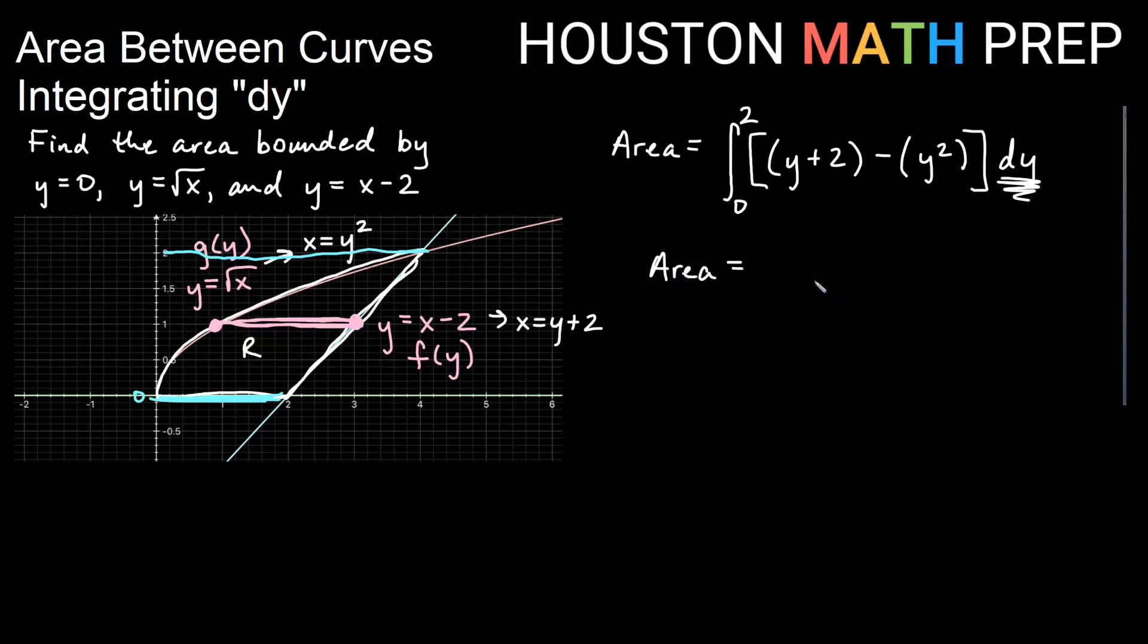So we'll work it out now. The area is going to equal the anti-derivative of y. Again, y squared over 2. Anti-derivative of 2 is going to be 2y. Resist the temptation to say 2x. Here, power rule again. Minus, just like the last one, y cubed over 3. Our bounds are 0 to 2. And so when we do our area, we will first plug in 2. So we'll get 2 squared, which is 4 over 2. That's 2. Plus 2 times 2 would give us 4 in the next term. And then plugging in 2, cube 2, that's 8, 8 over 3. So we'll have minus 8 thirds.